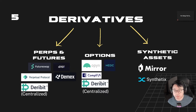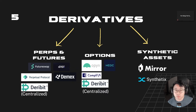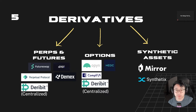Perps are basically a way for you to bet on the price movement of a token, whether it goes up or down, without actually owning the token. You collateralize using stablecoins to bet on whether the underlying asset goes up or down. Perps can last forever — that's why they're called perpetuals — and your position doesn't have an expiry time, unlike futures or options.